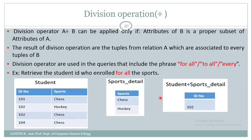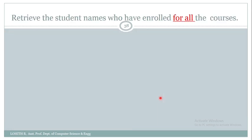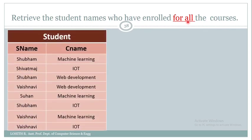Let me explain the division operation with one more example: retrieve the student names who have enrolled for all the courses. Again, we have the phrase 'for all,' which means we have to make use of a division operation.